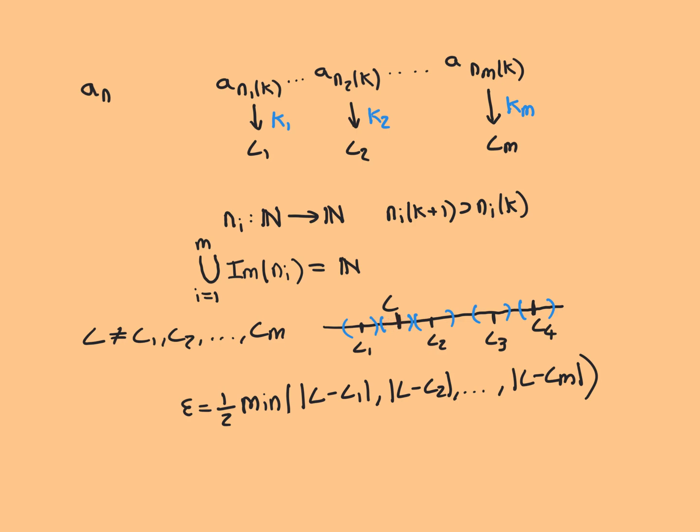What we're going to do is say that because these subsequences all converge to these limit points, then by the definition of convergence, there must eventually be a point where all of the terms of the subsequences are inside these epsilon intervals around these limit points. So all of these subsequences are going to go into their respective epsilon intervals eventually.